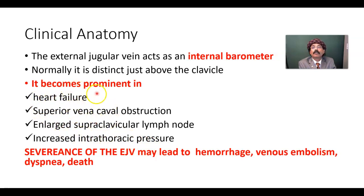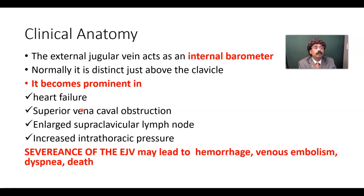The external jugular vein will be prominent in these conditions. It can also be made prominent by the Valsalva maneuver — if you close the mouth and nose and attempt to breathe out, then the external jugular vein will become prominent.